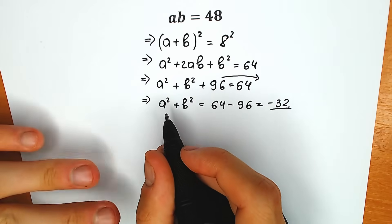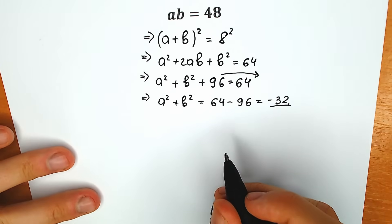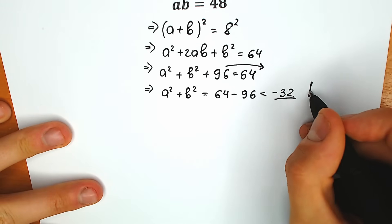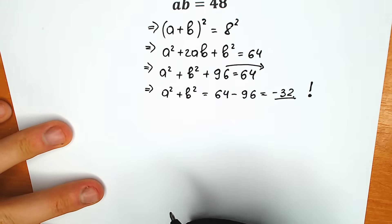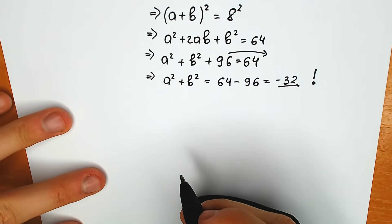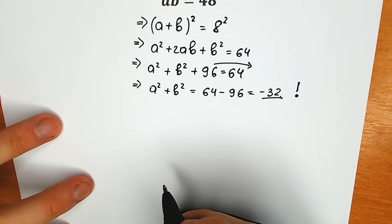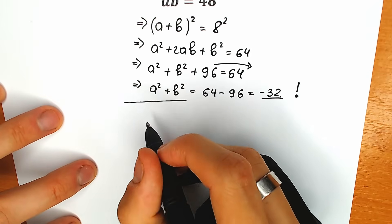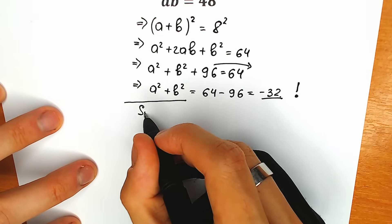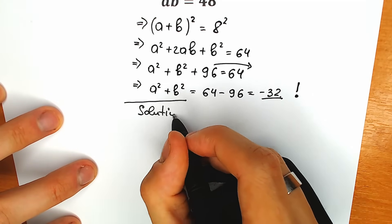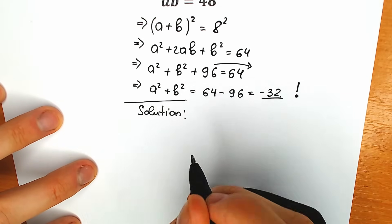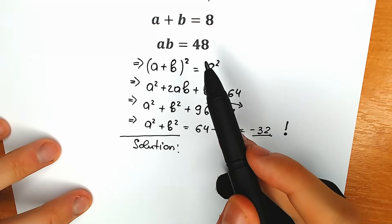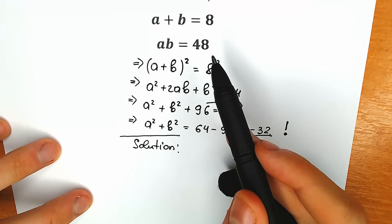So since we have a sum of two squares equal to minus 32, this is not real. In this case we don't have a real number root — that's a quick tricky move. Maybe we have complex roots. Let's try to solve it fully. What do we have in the beginning? a plus b equals 8, ab equals 48.